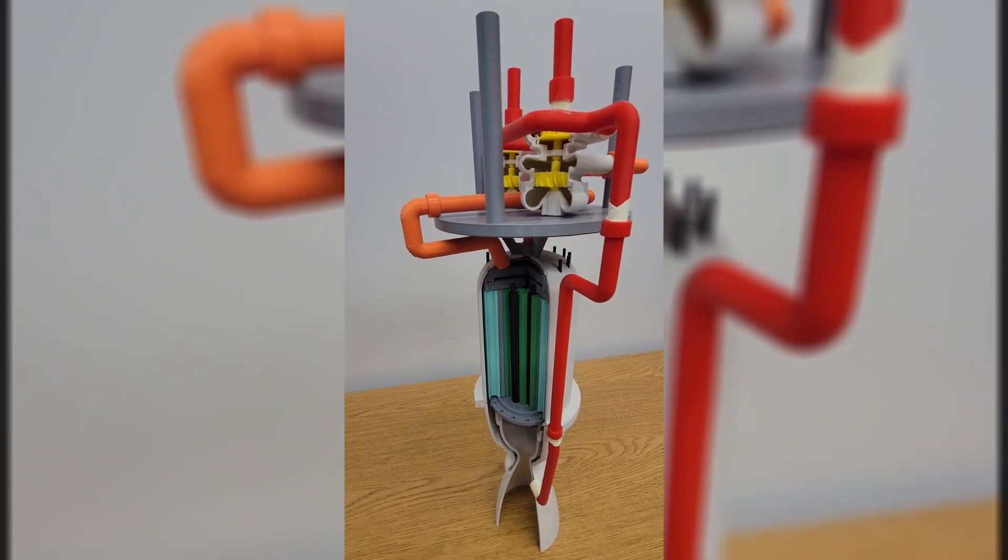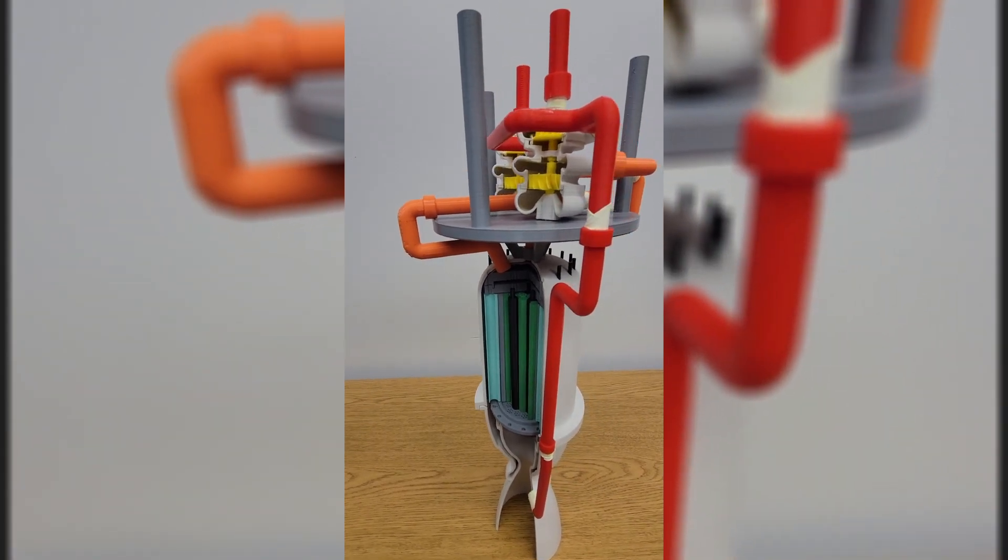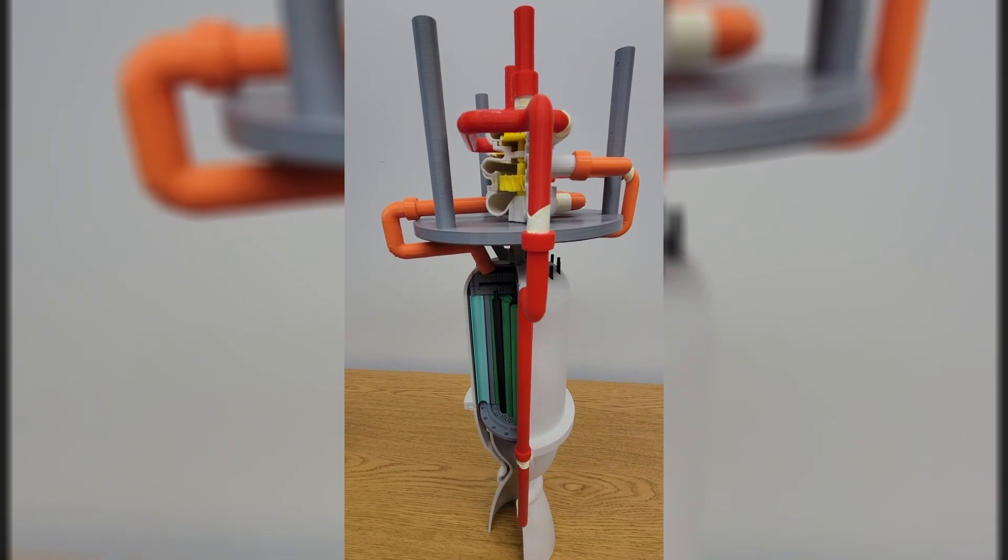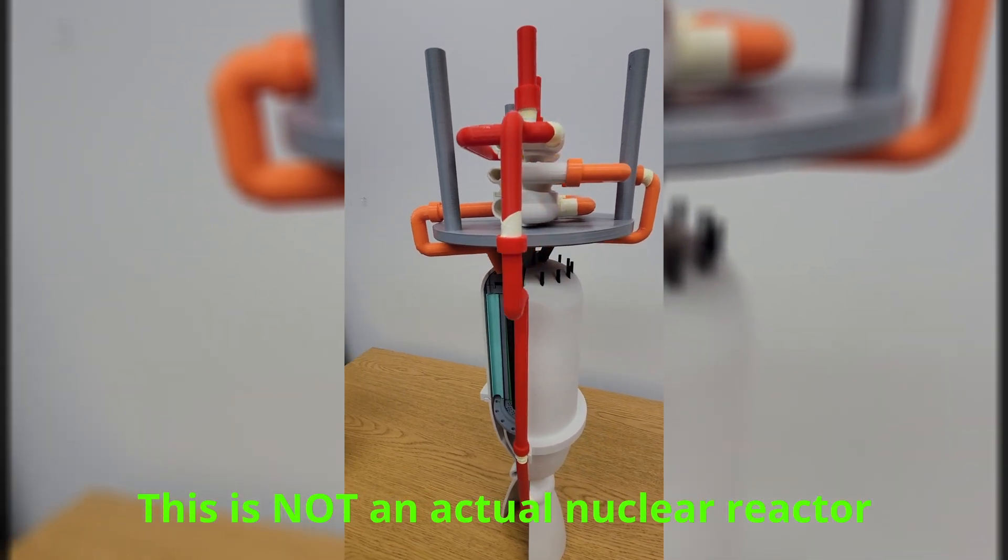This is a 3D printed model of a solid core nuclear rocket engine based on the US NERVA program. It is only a model and contains no radioactive components.